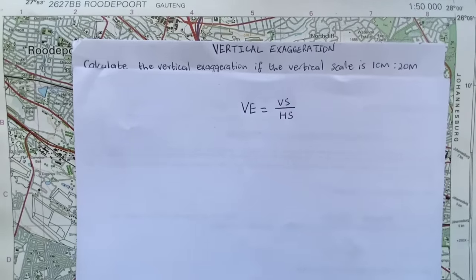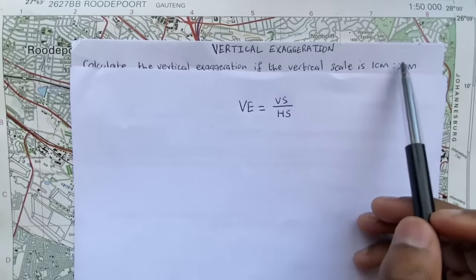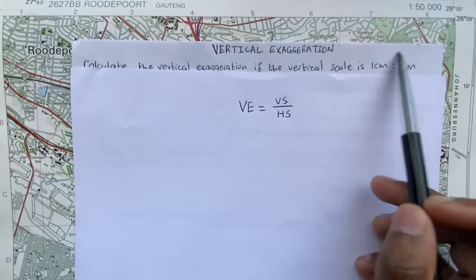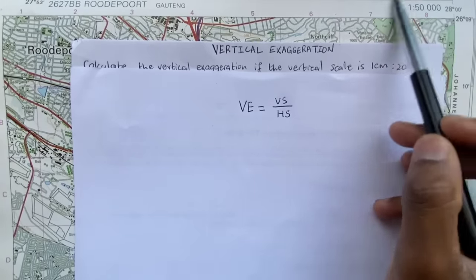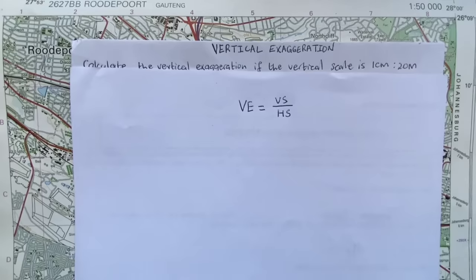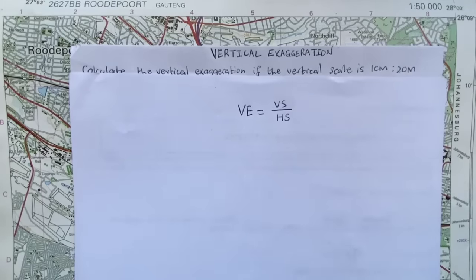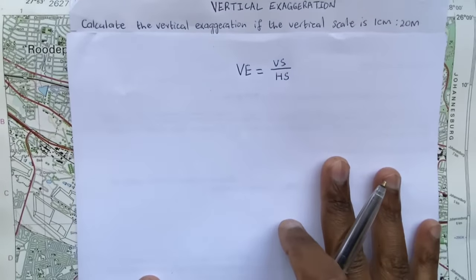If you were to, if your cross section is drawn from an orthophoto map, your scale would be 1:10,000. So for my solution I'm gonna use the VS, which is the vertical scale given to me there, and the horizontal scale of the map for me to find my vertical exaggeration.